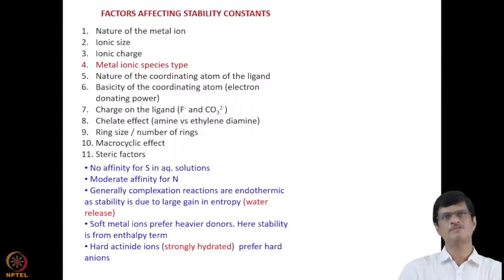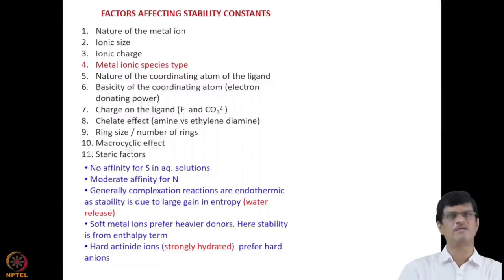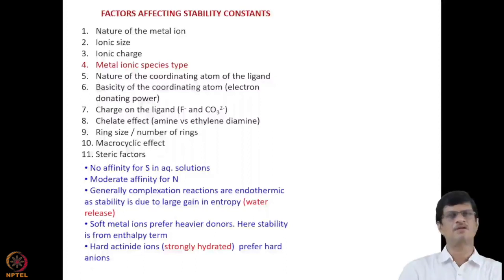What factors affect the stability constants? First, the nature of the metal ion — whether it is a soft or hard metal ion. Second, ionic size: for similar charge, the ionic size can differ due to actinide contraction. Third, ionic charge: actinides can have different charges from +2 to +6. Fourth, ionic species type — whether you have M⁵⁺, MO₂²⁺, or corresponding cations — which also decides the stability of the complexes. Fifth, the nature of the coordinating atom of the ligand, whether it is oxygen, nitrogen, sulfur, or a halogen like fluoride or chloride.